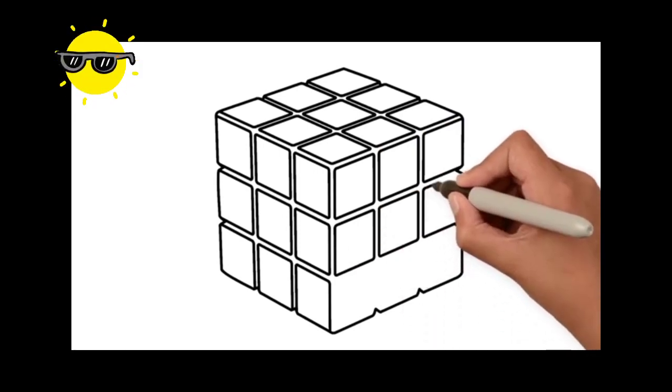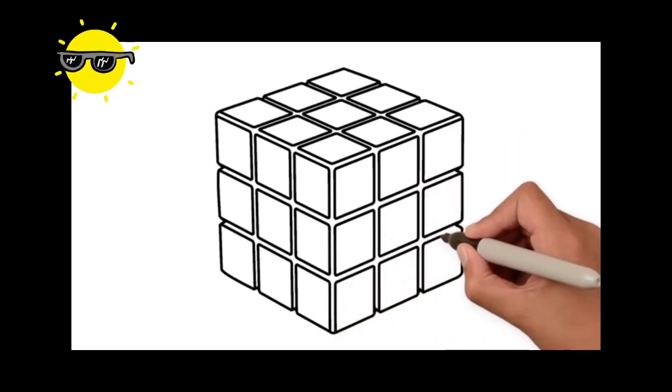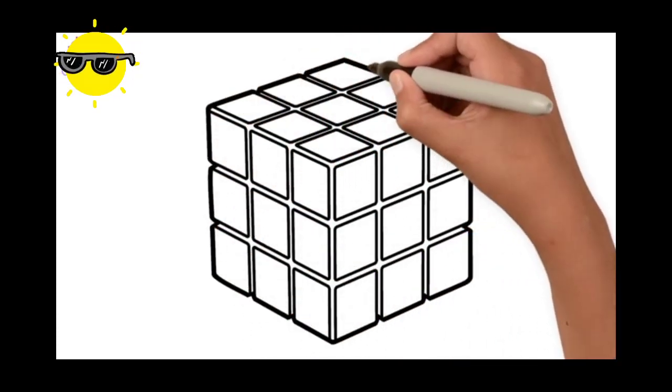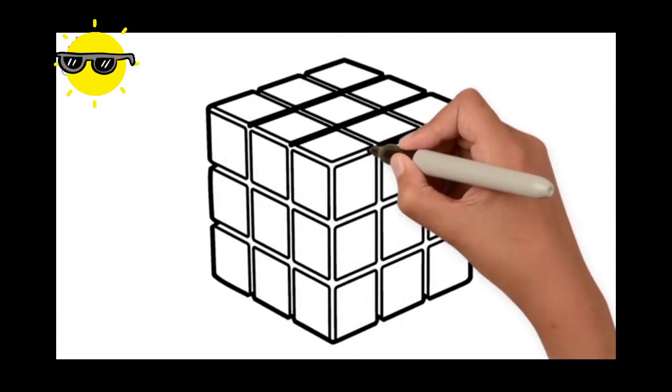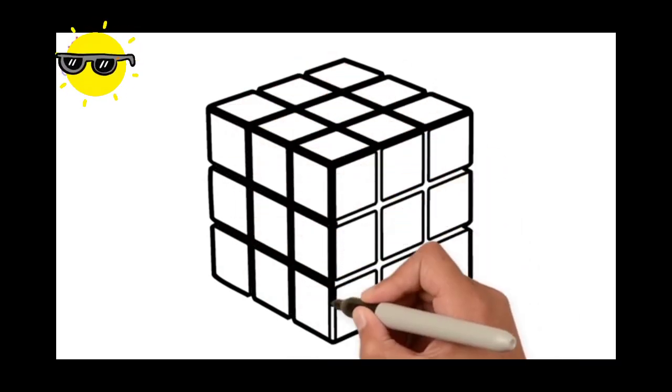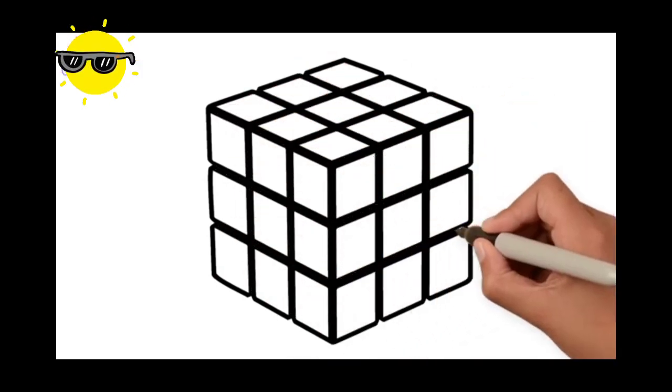So we're drawing lots and lots of squares. Darkening up the border. And in between each small square. There we go. Ready to paint?